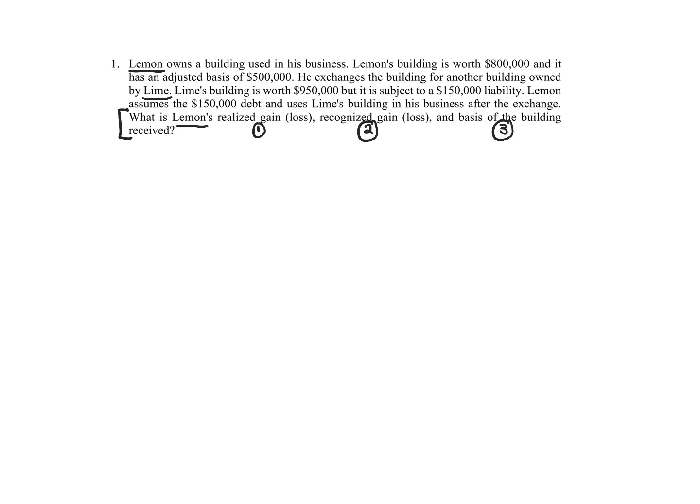Before we do that, because this is the first problem dealing with like-kind exchanges and non-recognition rules, there's lots of stuff going on — lots of numbers, lots of pieces of property, liabilities, lots of things. So whenever we do the first problem, we always try to draw it out. Students in the past have told me: 'I understand the rules and how everything works together, but I always mess up the problem because I just don't understand what's going on.'